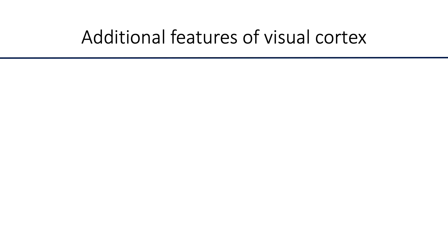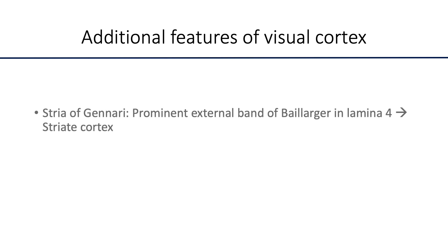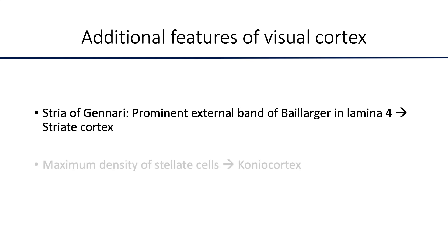In the case of the visual cortex, the external band of Baillarger in lamina 4 is very prominent, known as the stria of Gennari, which is why this cortex is also called the striate cortex. There is also maximum density of stellate cells here, giving it the name koniocortex, because the granule cells appear like dust particles.